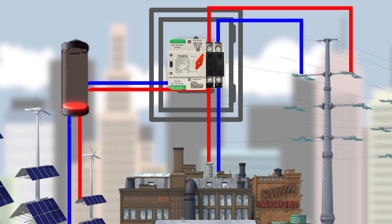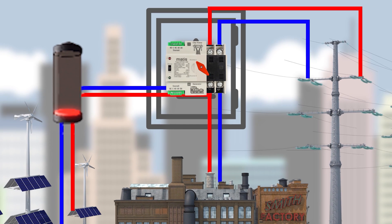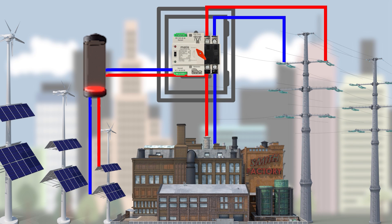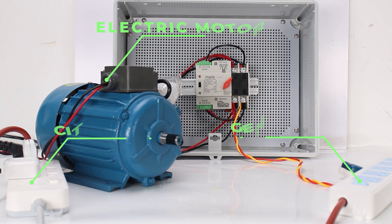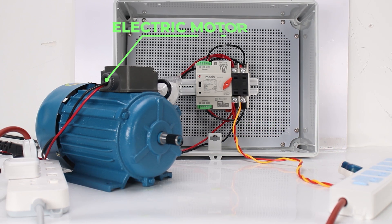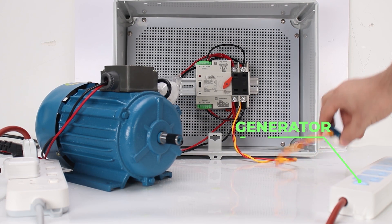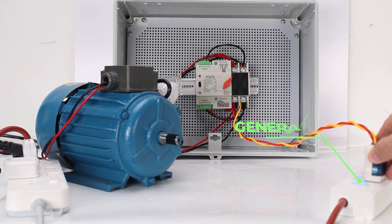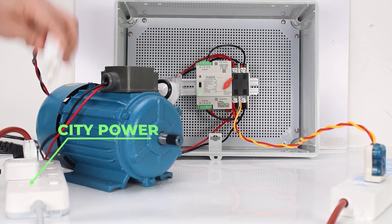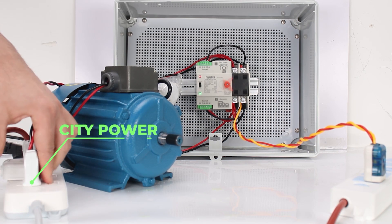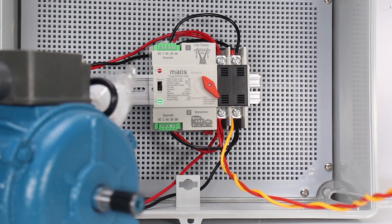At the time of battery discharge, the MTQ3 device will automatically switch to the city power supply system and continue to supply electricity to your object. For a good example, we simulated two power sources for MTQ3 and connected our electrical motor to it. Now we supply electricity from an alternative power source, but after the energy on our battery and generator is used up, the switch automatically switches the lever from state B to state A, and the power supply already comes from the city power supply network.